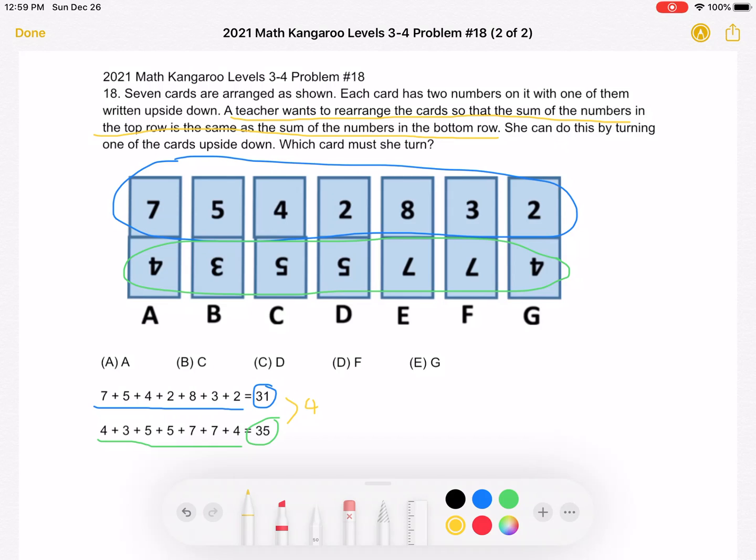So if we do 31 plus 2, we get a total of 33 on the top, and on the bottom if we do 35 minus 2, we also get a total of 33. So we want a sum of 33 on the top, sum of 33 on the bottom.